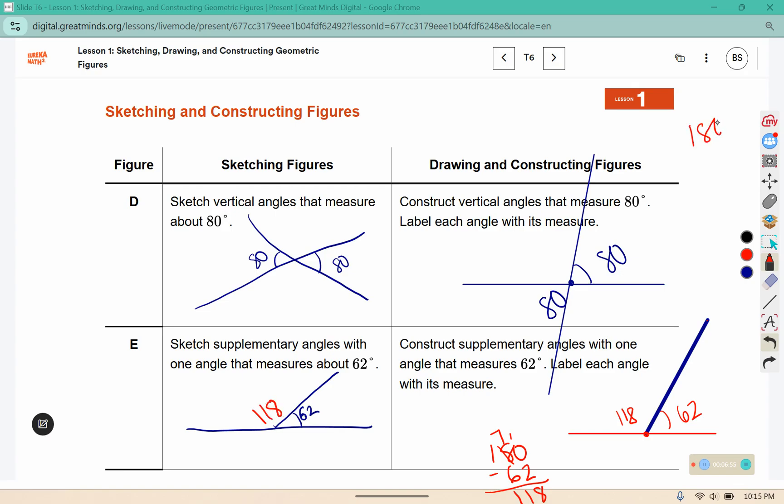If I had 180 and I subtracted 80 here, that would leave me with 100 degrees for these two angles.